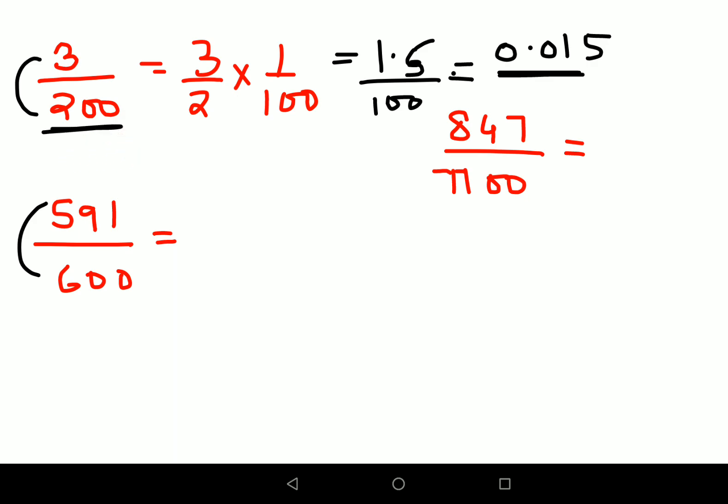Similarly, now for 591. First let me do this one. I'll write it over here properly. Here what you have, this also looks very tricky: 847 upon 7700. I can write this 847 as it is. I can write 7700 as 7 into 11 into 100.